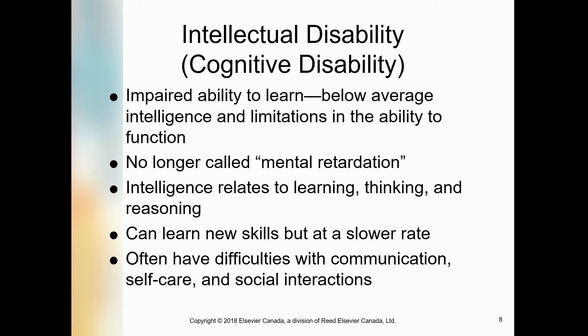Intellectual disability, also called cognitive disability, involves impaired ability to learn, below-average intelligence, and limitation in the ability to function. The person cannot learn, or if they learn, it is below average — they do not learn as their age demands, cannot compete with other students, and their learning ability is very limited. The terminology 'mental retardation' is no longer used; it is now called intellectual disability.